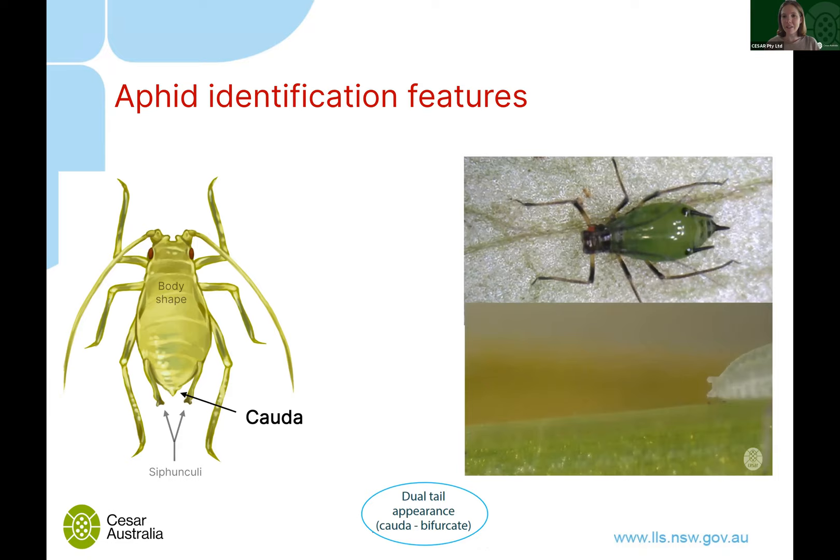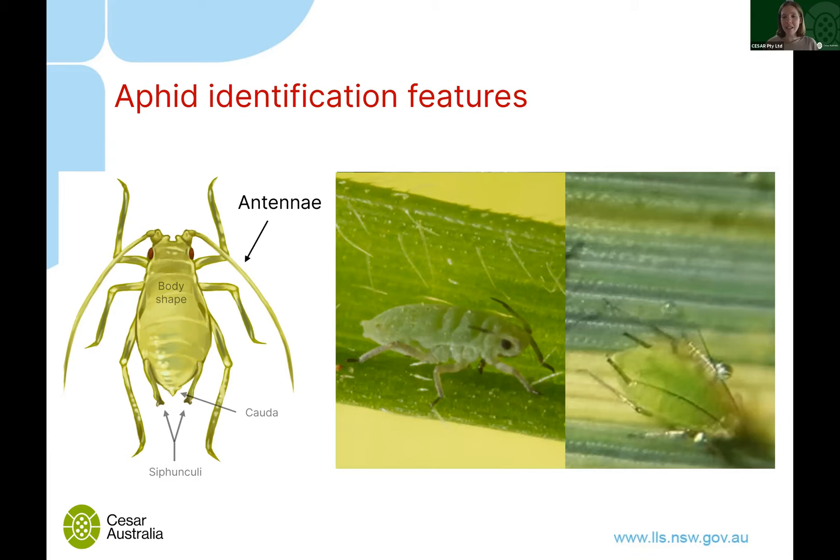The other part at the end of the body is the cauda — basically the little tail at the end of the aphid. Some aphids have a bifurcate (two-part) tail, while others have a longer single tail. Again, colours and shapes differ between species.